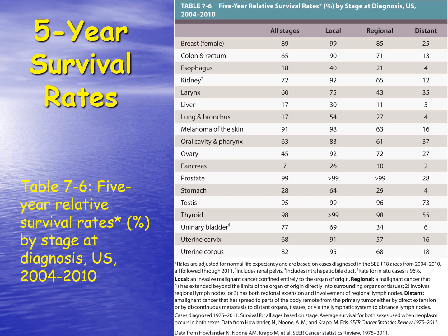This table shows five-year survival rates by stage. Breast cancer in females in the United States (2004-2010): all stages combined, 89% survival rate; with already-distant metastasis at diagnosis, only 25% survival rate at five years. Colon and rectal cancer: 65% overall, but only 13% with distant metastasis at diagnosis. Some cancers such as osteosarcoma and rhabdomyosarcoma are not listed because they simply do not have five-year survival rates — patients just do not survive to five years.